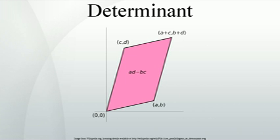The determinant of a matrix of arbitrary size can be defined by the Leibniz formula or the Laplace formula. The Leibniz formula for the determinant of an n×n matrix A sums over all permutations σ of the set {1, 2, ..., n}. A permutation is a function that reorders this set of integers. The value in the i-th position after the reordering σ is denoted σ(i). For n = 3, the original sequence 1, 2, 3 might be reordered to σ with σ(1)=2, σ(2)=3, σ(3)=1. The set of all such permutations, also known as the symmetric group on n elements, is denoted S_n.